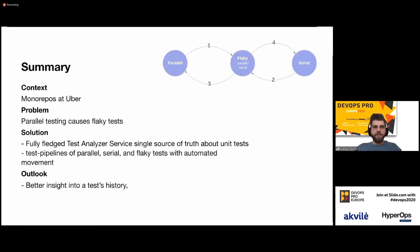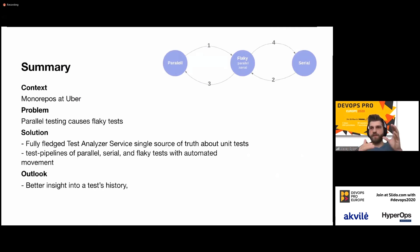To wrap up: we have the context of monorepos at Uber and the problem of parallel testing that causes flaky tests. Our solution is a test analyzer service — a single source of truth about unit test health and unit test parallelism problems — with three pipelines of parallel, serial, and flaky tests with automated movement between them.